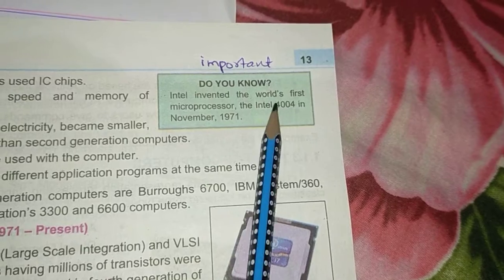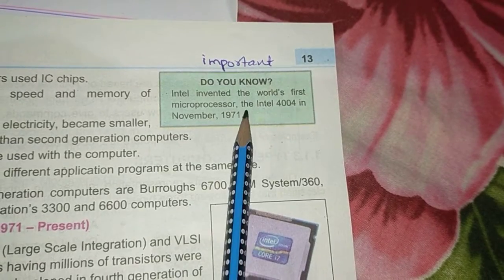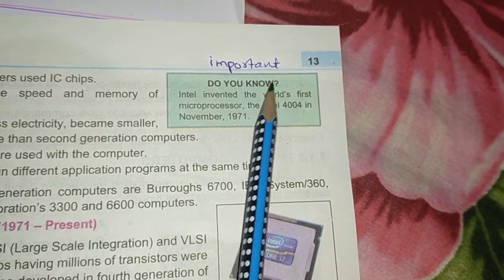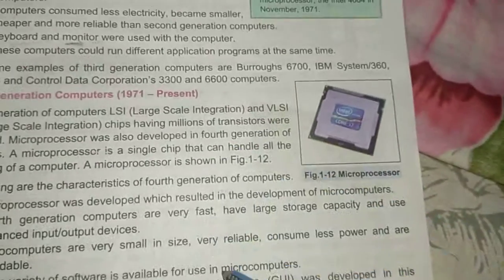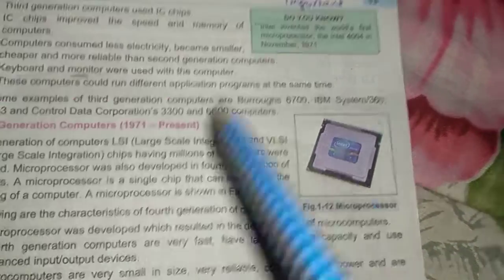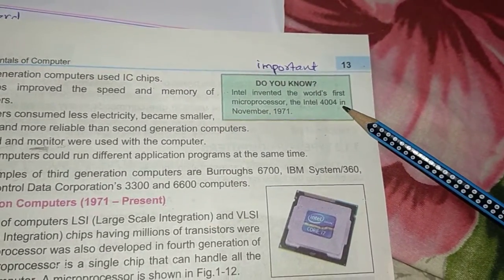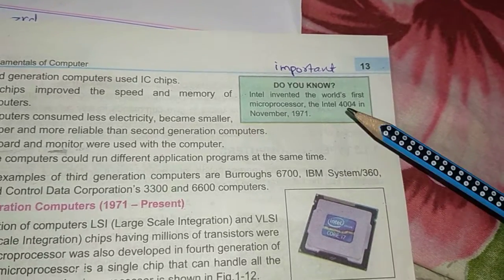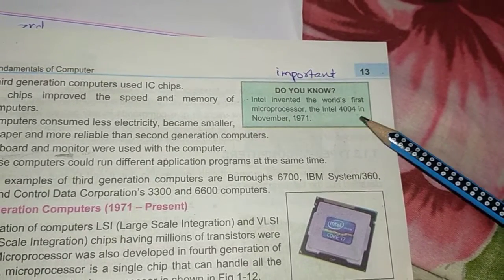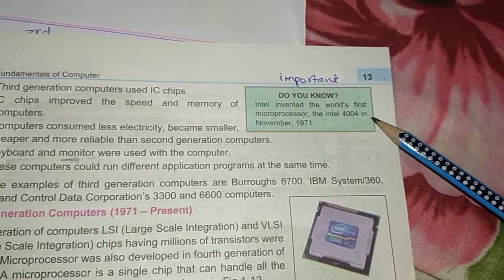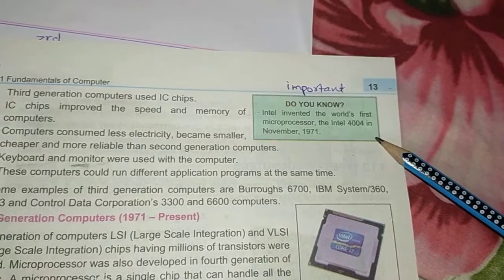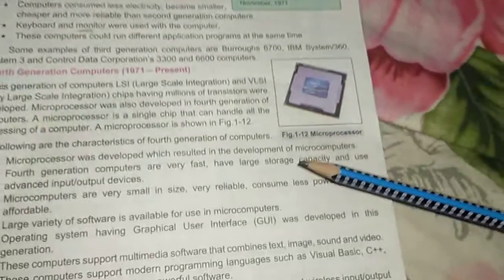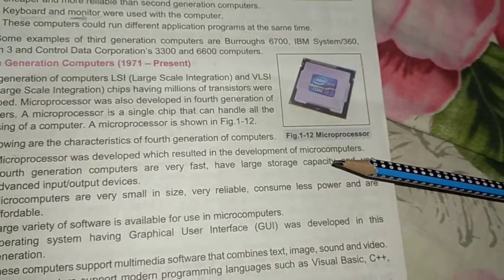Intel invented the world's first microprocessor — the Intel 4004 — in November 1971. This is important information related to the fourth generation. Remember this point as it is an important MCQ topic.